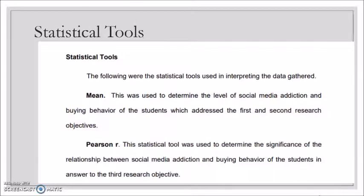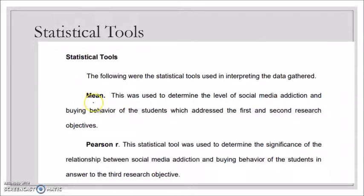The next part of the Method or Chapter 2 is the statistical tools section. It tells your reader the statistical tools used in interpreting the data. For a correlation study, we use a test of correlation such as Pearson r. But before that, we need to determine the level of the first variable and the level of the second variable separately.